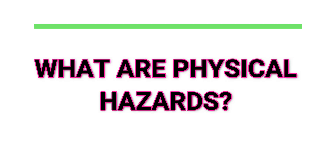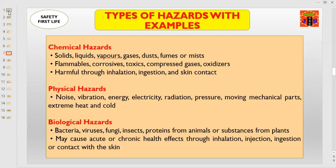What are physical hazards? The examples of physical hazards are noise, vibration, energy, electricity, radiation, pressure, moving mechanical parts, extreme heat, and cold.